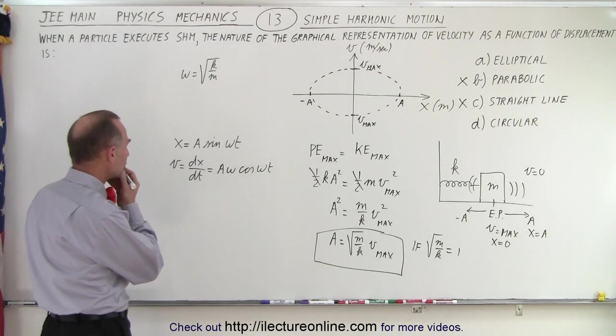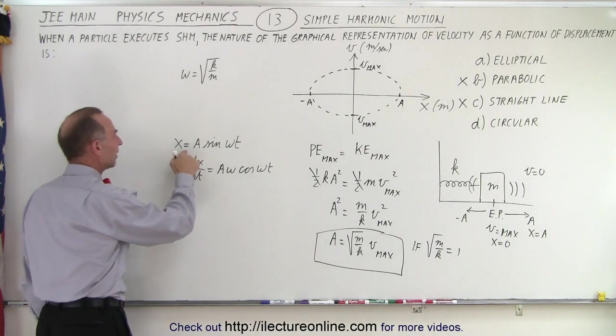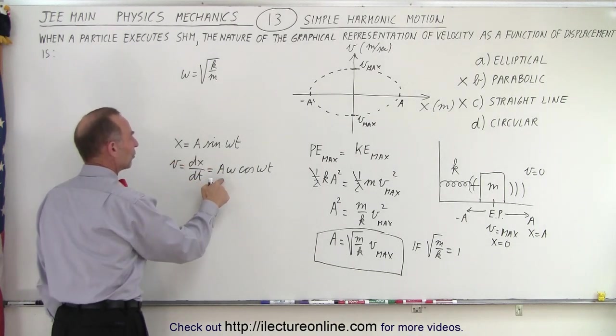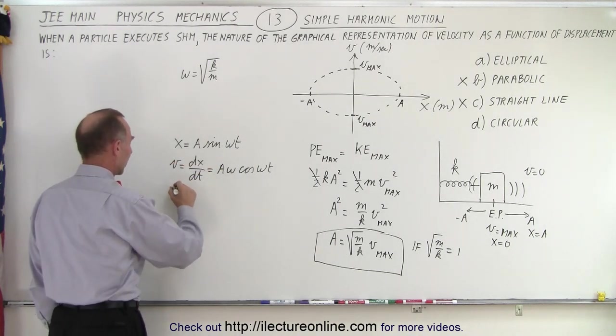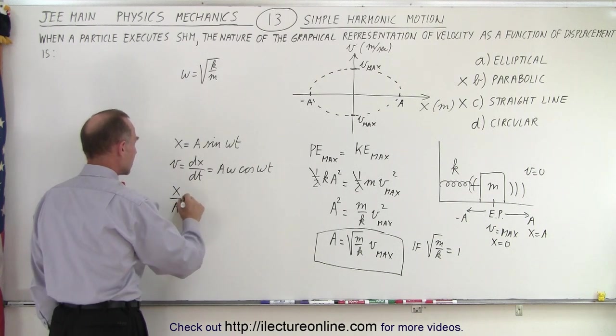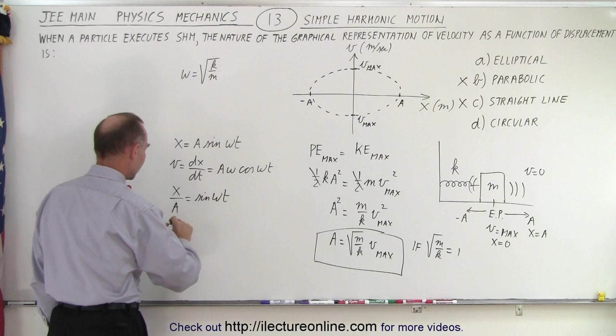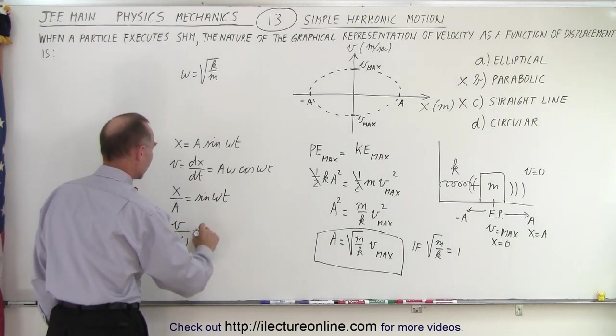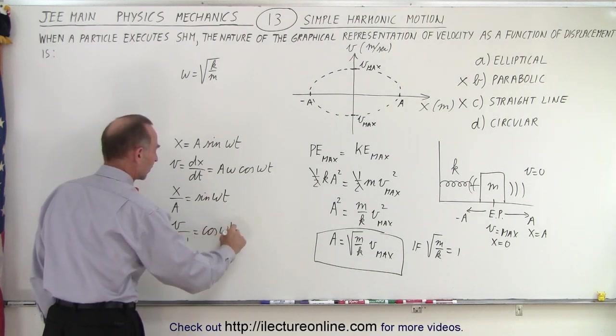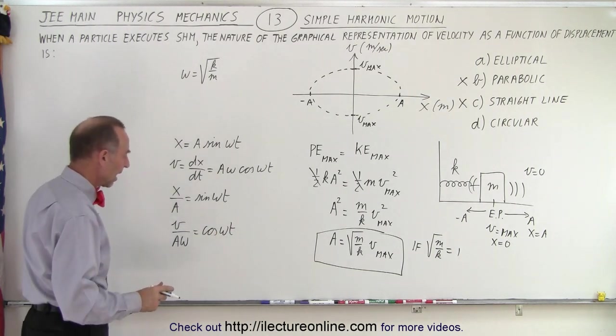Next what I'm going to do is I'm going to divide this equation by a and this equation by a omega. So with other words, x over a equals the sine of omega t, and here I can say that v over a omega equals cosine of omega t.